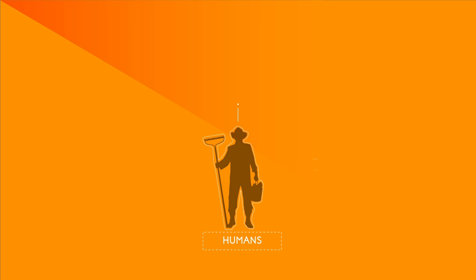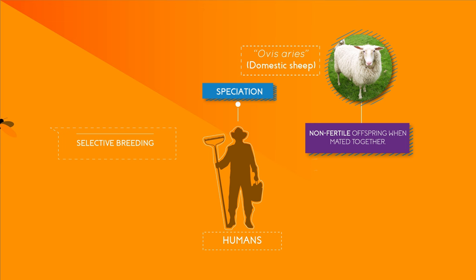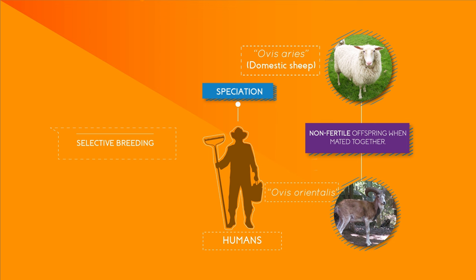Human beings can directly influence or even potentially cause speciation. A program of selective breeding of livestock over several years led to the creation of the domestic sheep Ovis aries, which is unable to produce fertile offspring when mated with Ovis orientalis, the species from which it is descended.